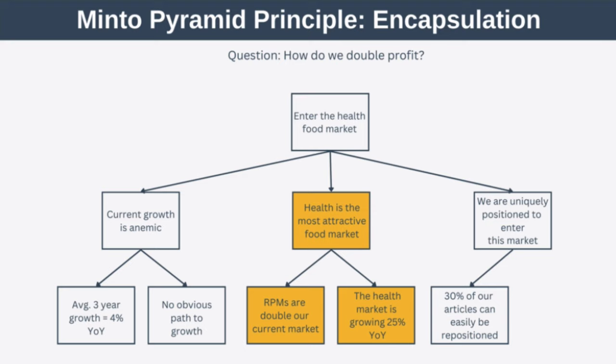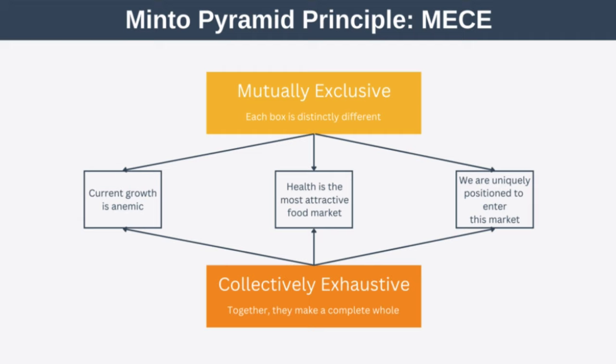The second thing you need to know about is that at every horizontal level of your Minto Pyramid you should apply a concept known as MECE, an acronym standing for Mutually Exclusive, Collectively Exhaustive. Mutually exclusive means each box at a given level should be completely separate and not overlapping in any way. Collectively exhaustive means the set of all boxes at a given level should exhaust all the options — all boxes at a level should make the whole, and adding more boxes should not be possible or shouldn't make sense.